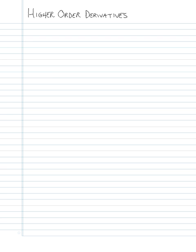Before we go much further we need to be familiar with what are called higher order derivatives. You may have heard me refer to the first derivative, which might imply that there could be a second derivative, then maybe a third derivative, and then maybe a fourth derivative — and in fact there are such things. Let's go through some examples and understand what we mean by these.